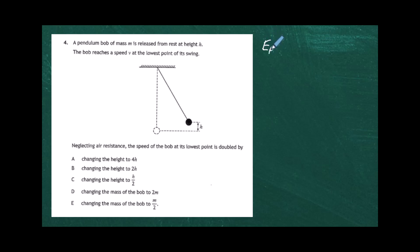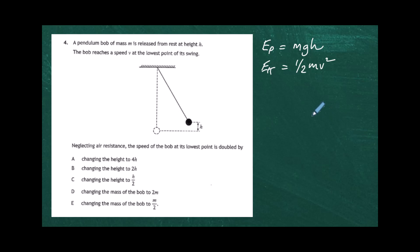At height h the bob has potential energy Ep equals mgh. When it reaches the lowest point that potential energy is completely converted to kinetic energy — since there's no air resistance. So kinetic energy Ek equals one half mv squared, and the two energies are equal: one half mv squared equals mgh.